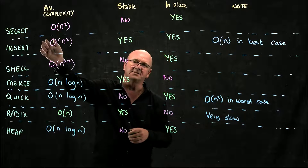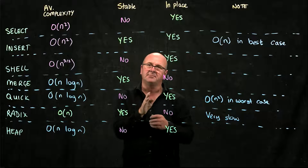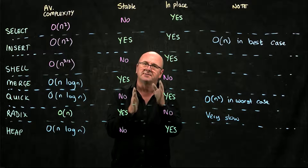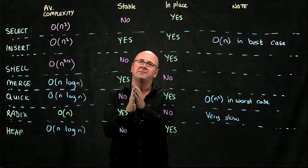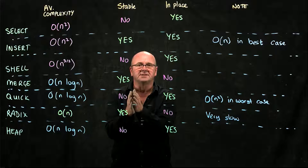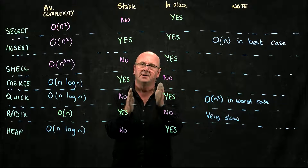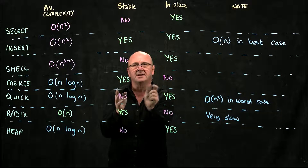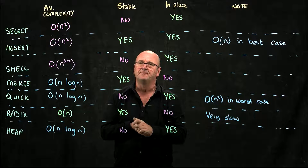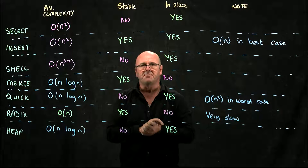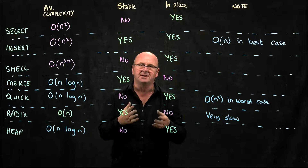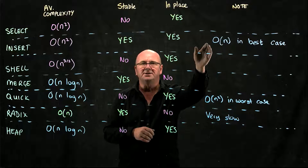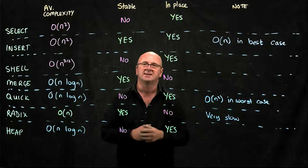We have the insertion sort, where you take the second element and compare it to the thing before it. If it's smaller, you swap it. Then you go to the third element and keep moving it forward until the thing before it is smaller than it. Then you take the fourth element and move it forward, and then the fifth. You're inserting each element in the place where it should be. Insertion sort is also O(n²), so it's not typically useful unless you have an already sorted list, in which case it has complexity of O(n).